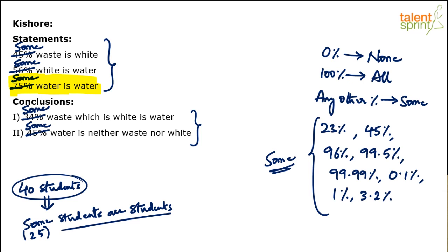Never look at the numerical value of those percentages. There is nothing like mini-some and maxi-some — some is some, whether it is 1% or 99%. So let's solve this. The statements are: some waste is white, some white is water, some water is water.